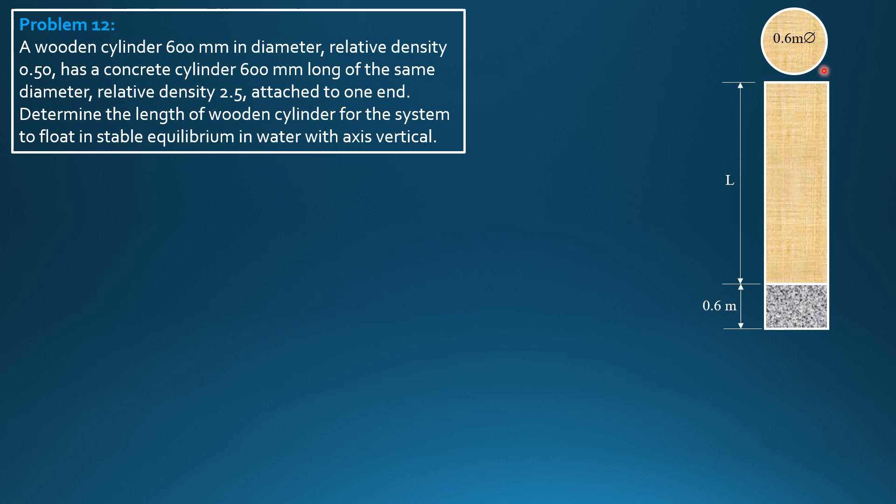The diameter is 0.6, radius 0.3. This is the center of gravity or centroid of the wooden cylinder, L over 2 from the bottom, and plus 0.6, so L over 2 plus 0.6 from the bottom of the concrete cylinder. There acts weight 1. This is the center of gravity of the concrete cylinder, 0.3 meter from the bottom. That's weight sub 2. This distance is 0.5 of L plus 0.6.